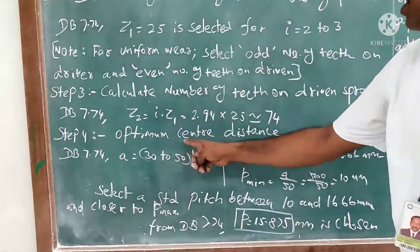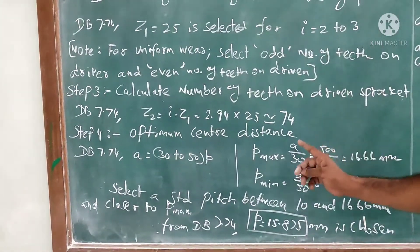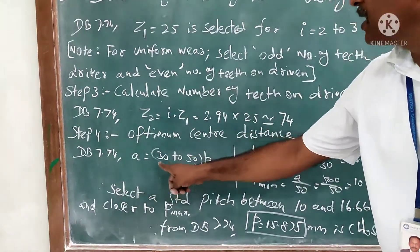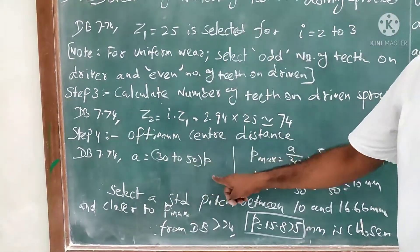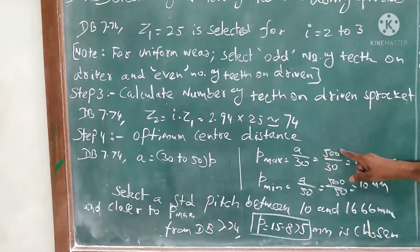Step number four: calculate the optimum distance from center distance and select the pitch of the chain. We know the formula from data book: A = 30 to 50 times of pitch. Where first we calculate pmax = A/30.